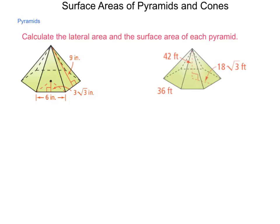We're going to calculate the lateral area and the surface area of each of these pyramids. For our first pyramid here on the left, we have a distance into the middle of the triangle as being 3 root 3, and we have a slant height of 9, a side length of 6, and counting the sides, this is a hexagonal pyramid.